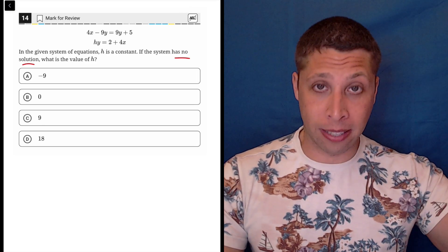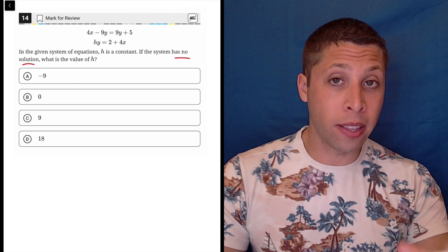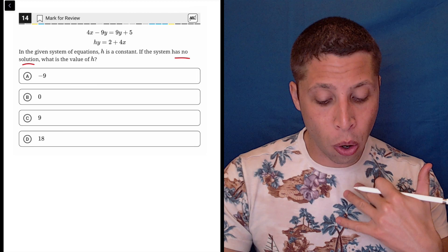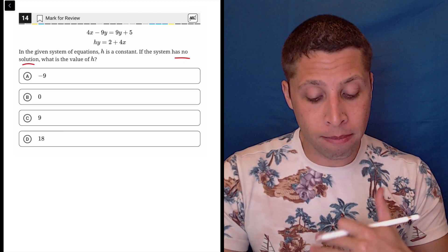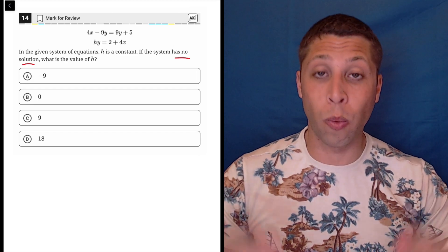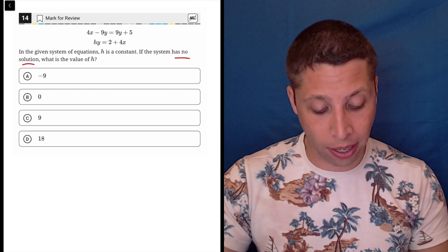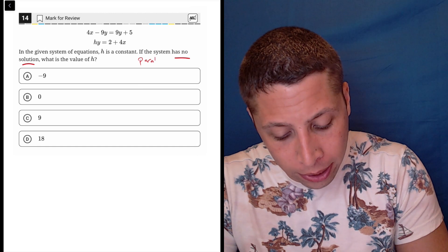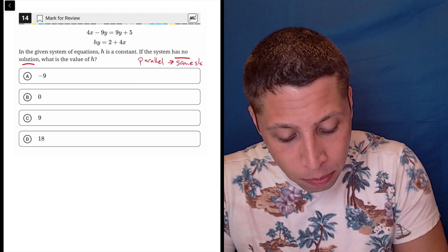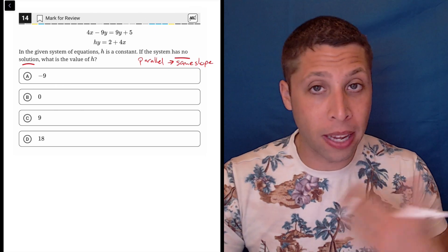The way my brain thinks about this is I notice that these two equations, even though they're kind of messy, they're both lines. So we need to know when do lines have no solutions? When would two lines not intersect? Well, that only happens when they are parallel. And when they're parallel, it's because they have the same slope. They have different y-intercepts, but they have the same slope.